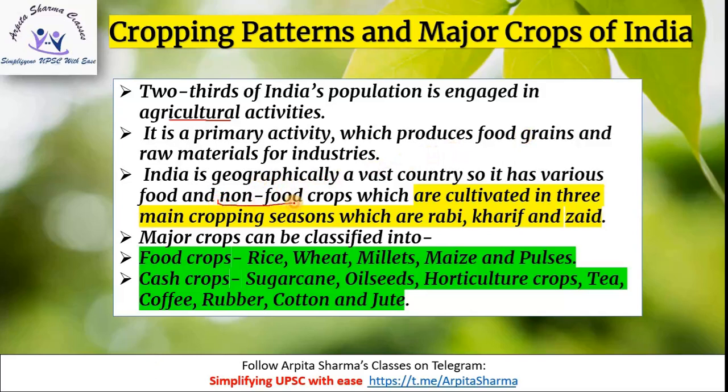Crops are grown in various seasons. There are three seasons: Rabi, Kharif and Zaid. These are the three seasons we will cover.